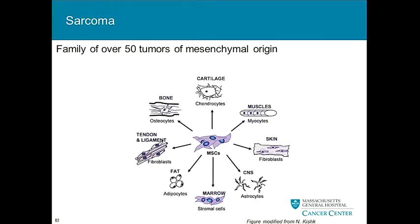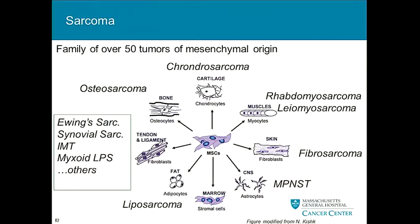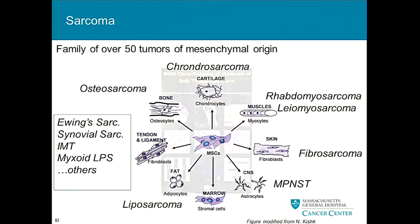There are a few ways to parse and organize these. Some are based on histology — how they look, what cells they resemble, what their cell of origin is. Others have specific mutations of an unclear cell of origin but very distinct translocations. Probably the most well-characterized example is Ewing sarcoma. We don't know the cell of origin of Ewing sarcoma, but nearly all of them have a translocation between two genes: EWS and FLI1.